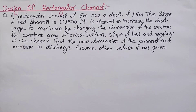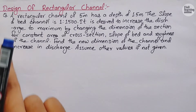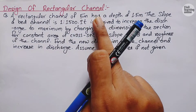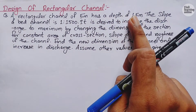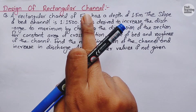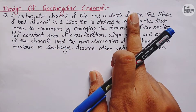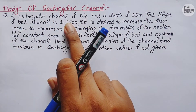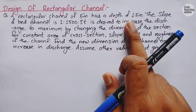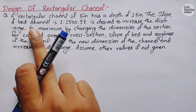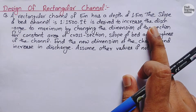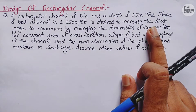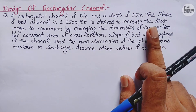Before starting the solution, let me first read out the question. The question says: a rectangular channel of 5 meters has a depth of 1.5 meters — meaning the width of the rectangular channel is 5 meters and its depth is 1.5 meters. The slope of the bed channel is 1 in 1500. It is desired to increase the discharge to maximum by changing the dimensions of the section.